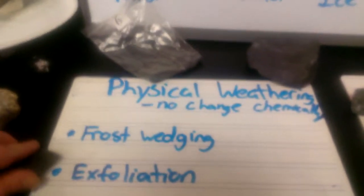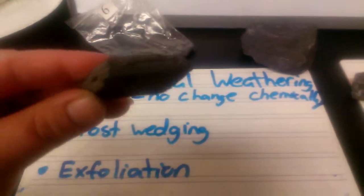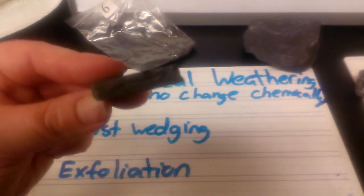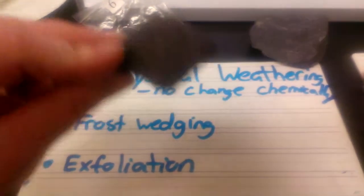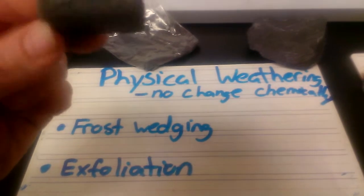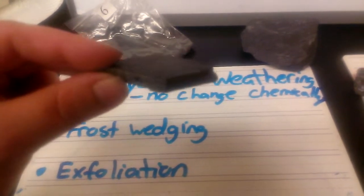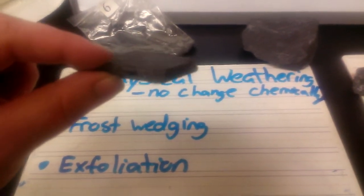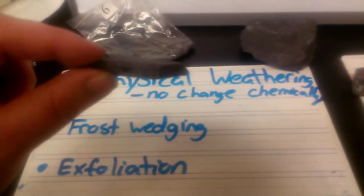Now the second type that we want to focus on is called exfoliation. So I have a nice little rock, shale. And shale has many, many layers. And if you look at the layers from the side, you can see them, and it looks like they could peel apart.